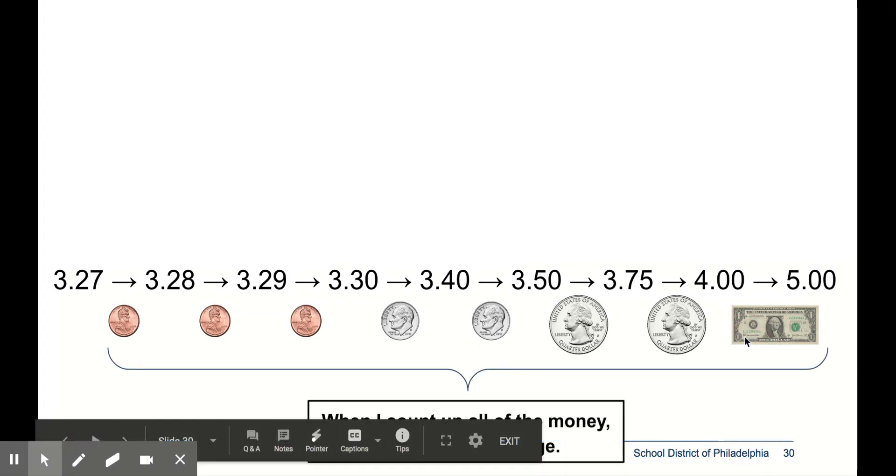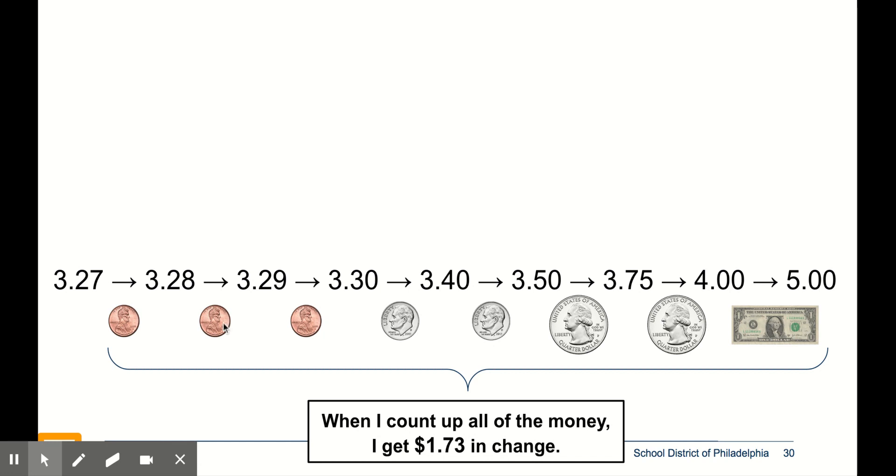Let's add it up. $1, $0.50, $0.60, $0.70, $0.71, $0.72, $0.73. $1.73 is how much change they owe me.